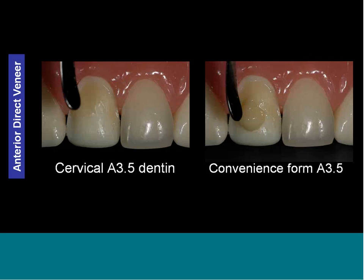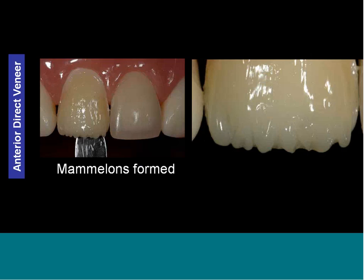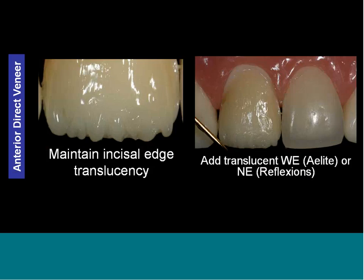For this exercise from a hands-on course, we're using just two shades. Use an A35 — do the convenience form, bring it down, shape it over the tooth. If you want depth of color rather than a straight edge, impart some irregularities into the incisal edge. In nature, things are never straight or flat — there's always irregularities that let light come through at different angles. Then, similar to the class IV, add translucent enamel — either WE from Elite, NE from Reflections, or the Frost from Reflections for lighter shades. Then form the incisal edge.